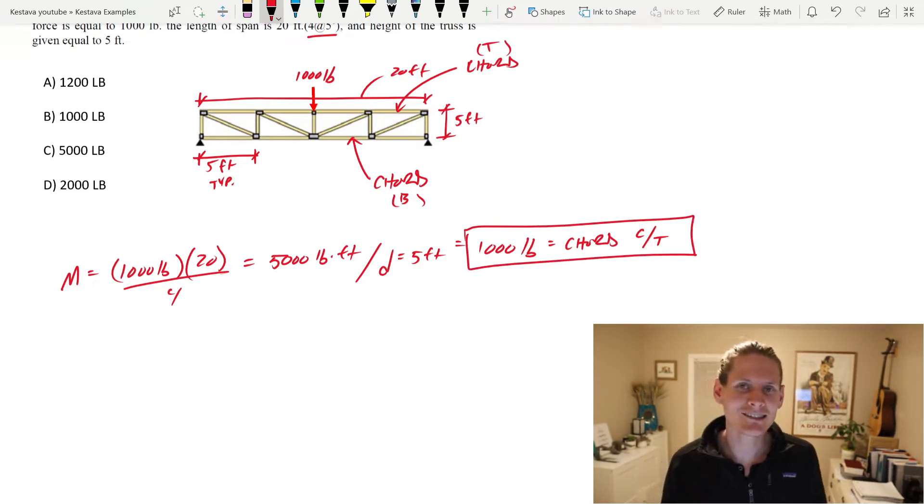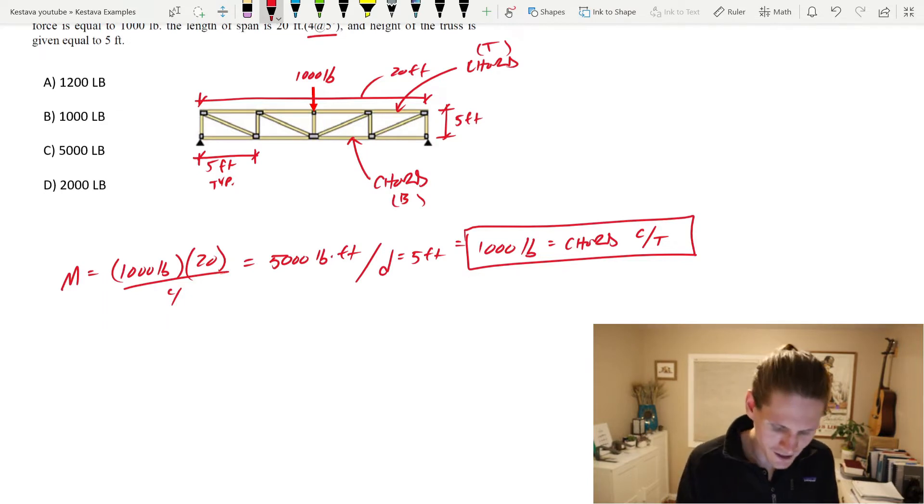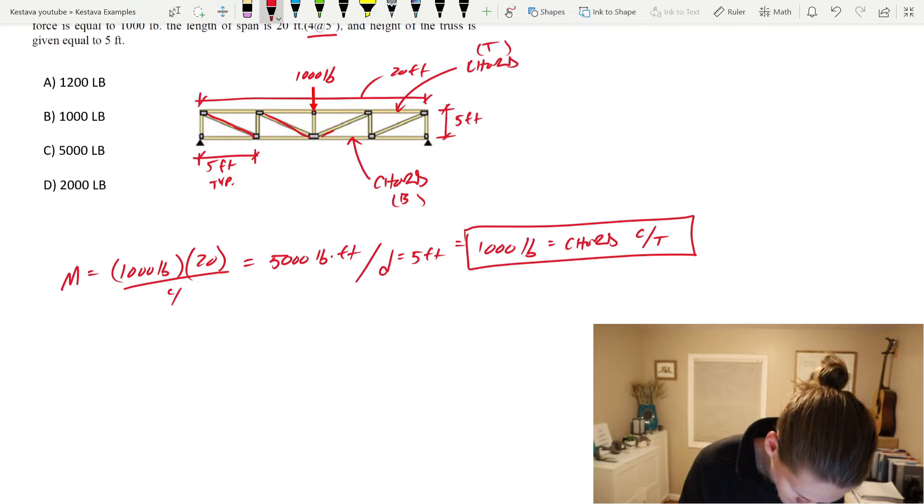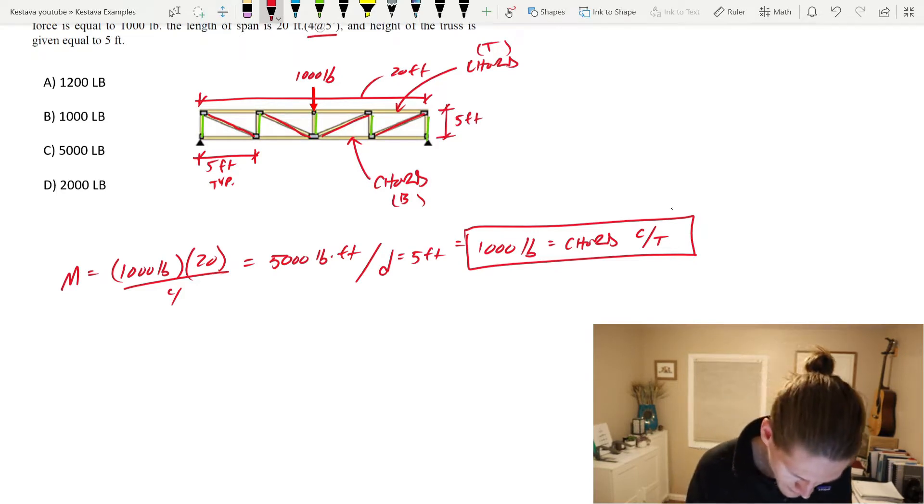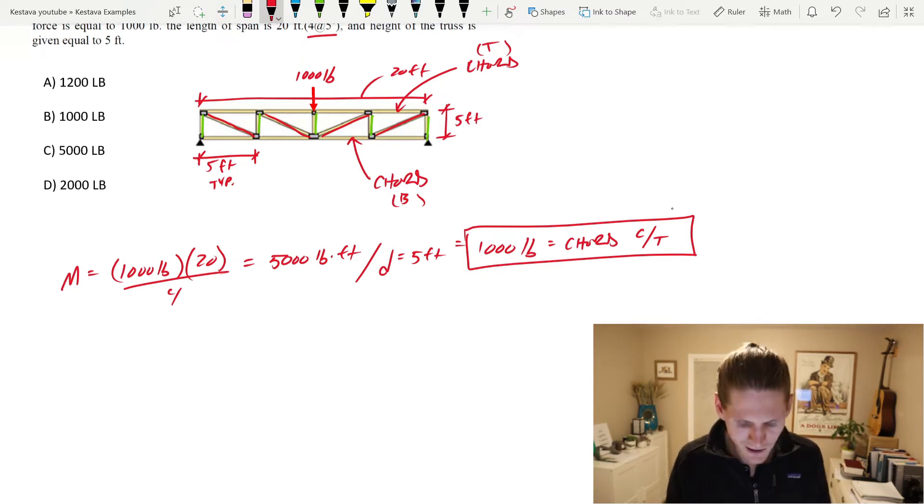But for this instance, based on the orientation of our web members, so our diagonals, so these guys right here, and our verticals, these guys right here in green, this is not actually true. This is actually slightly conservative. What actually happens is if you do method of sections or method of joints, you do not actually get this as your final answer for the bottom chord. That's the key word here, the bottom chord. The top chord, you do end up getting 1,000 pounds in compression.